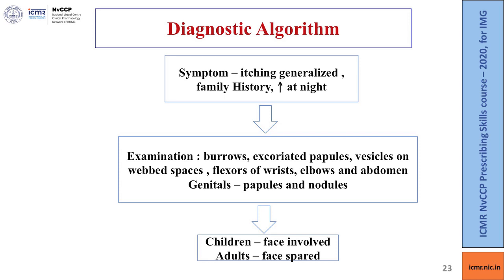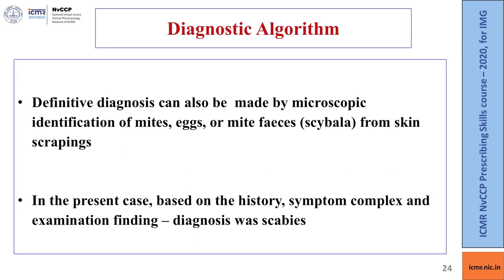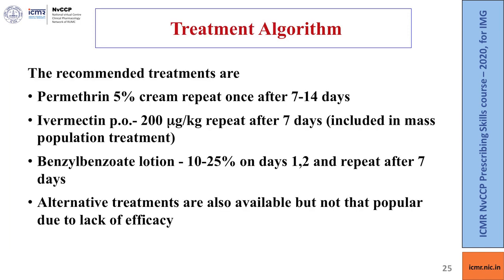Examination findings include vesicles on webbed spaces, flexors of wrist, elbow, abdomen, and papules and nodules on genitals. In children the face is involved; in adults the face is spared. Definitive diagnosis can be made by macroscopic identification of mites, eggs, or mite feces from skin scrapings. Based on the history, symptom complex, and examination findings, the diagnosis is scabies. Recommended therapies are permethrin, ivermectin, and benzyl benzoate; alternatives are available but less popular due to lack of efficacy.